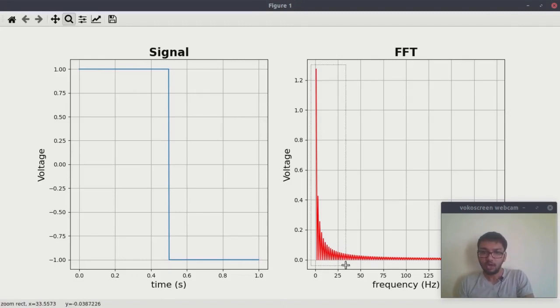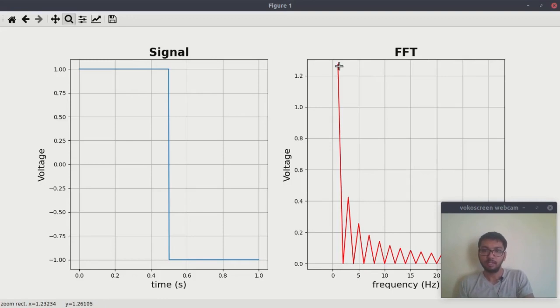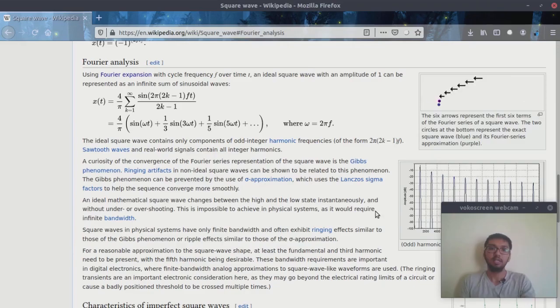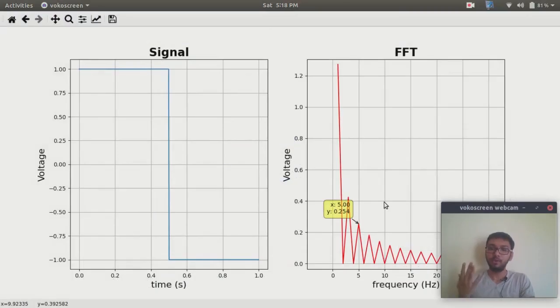This is the square wave. Here, if you notice, there are odd harmonics only - only odd harmonics. We have a sharp peak at one hertz, second peak at three hertz, third peak at five hertz. If you notice, it is exactly similar to this thing: one hertz, three hertz, five hertz.